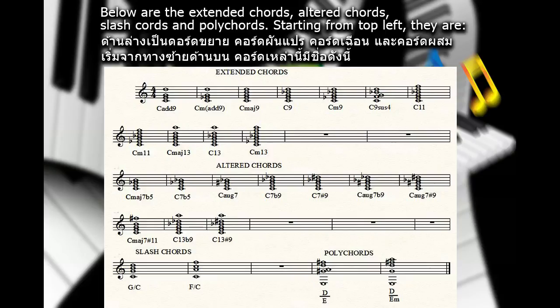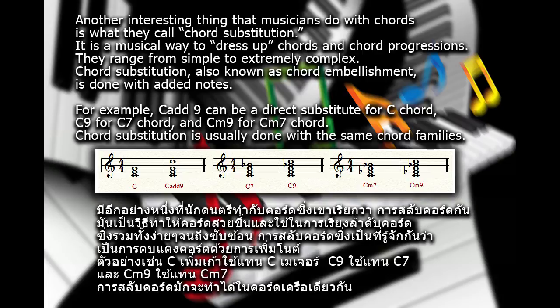C major 7 sharp 11, C13 flat 9, C13 sharp 9. For slash chords, the top letter corresponds to the chord and the bottom letter indicates the bass note. G slash C is C major 9th with no third. F slash C is C sixth suspended fourth. Finally, the poly chord is a combination of two chords played together creating a more complex sound. D over E is E 11th, and D over E minor is E minor 11th.